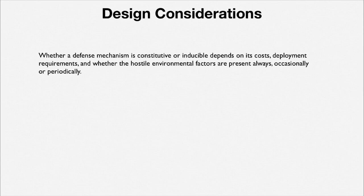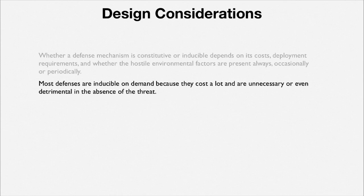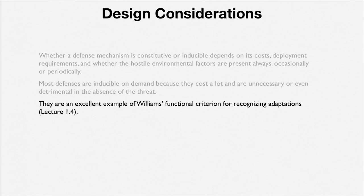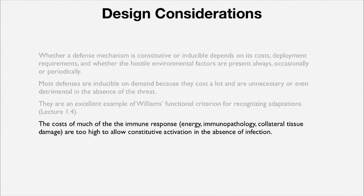Most defenses are inducible on demand because they cost a lot and they are not needed, or they're even detrimental if the threat's not there. They are an excellent example of George Williams' functional criterion for recognizing what is an adaptation. An inducible defense is arguably virtually always an adaptation produced by natural selection — only expressed when the threat is there. The costs of much of the immune response, such as energy, immunopathology, and collateral tissue damage, are just too great to allow constitutive activation.